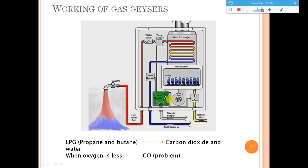Looking at this diagram: cold water comes in, and inside there is a microcontroller system that manages water flow into the system, as well as a valve controlling gas flow — propane or butane, commonly LPG. The gas burns, and tubing allows the cold water to pass through, where heat transfer from the gas heats the water. A control valve and temperature sensors regulate this, and finally hot water comes out at your tap.